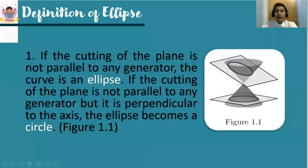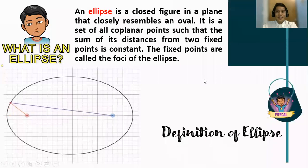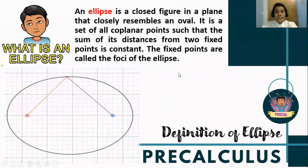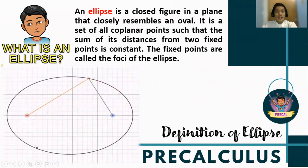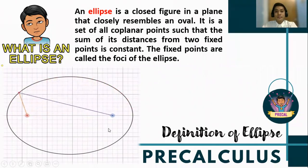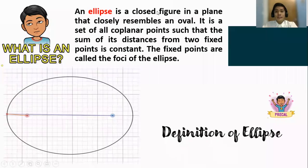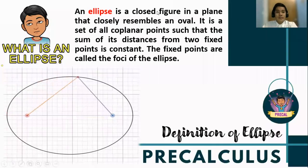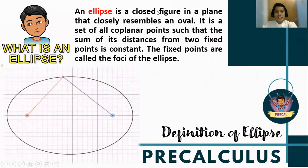But how do we define an ellipse in two-dimensional conic sections? An ellipse is a closed figure in a plane that closely resembles an oval. By definition, it is the set of all coplanar points such that the sum of the distances from the two fixed points is constant.